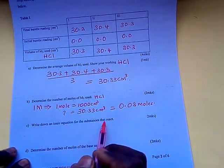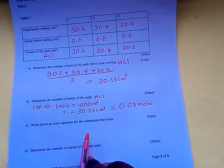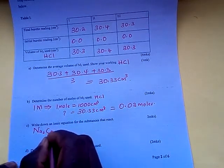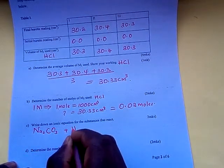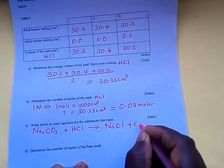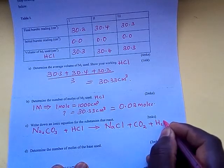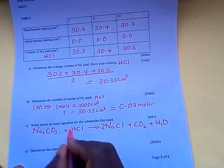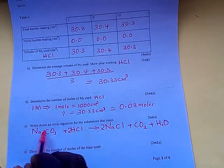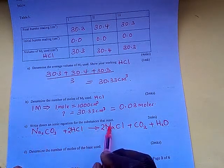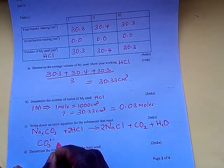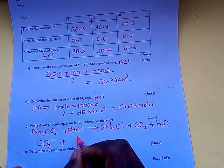Write an ionic equation for the reaction. First the full equation: sodium carbonate reacts with HCl to form sodium chloride plus carbon dioxide plus water. Balance the equation. For the ionic equation, sodium ions on both sides are spectator ions and cancel out, leaving CO₃²⁻ plus 2H⁺.